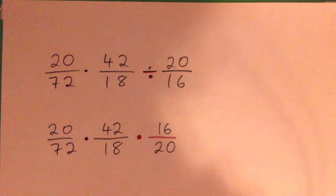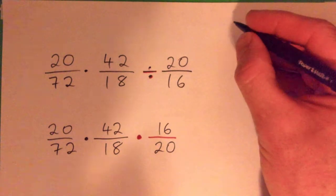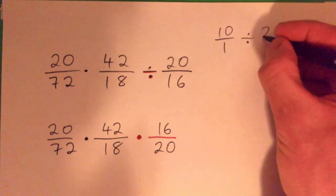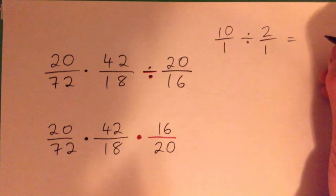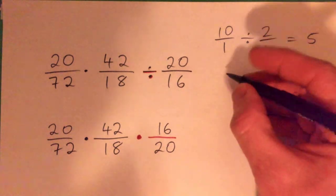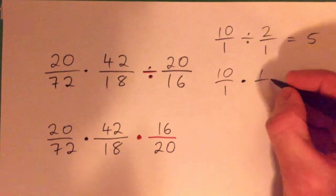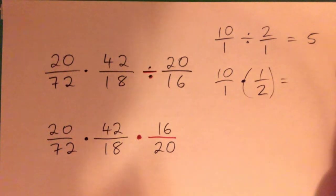Alright, and the reason for that is if you had 10, which is 10 over 1, divided by 2, which is 2 over 1. 10 divided by 2 is what? 5. And that's the same thing as 10 over 1 times 1 over 2 times a half, isn't it? What's 10 times a half? 5.